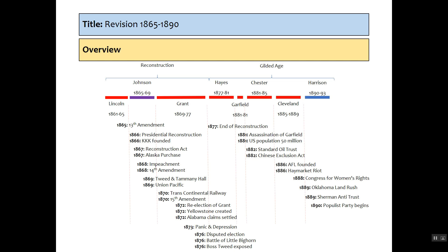The first thing I'm going to show you is this timeline with some major events — by no means all of the events of the Gilded Age and the Reconstruction, but most of them. We've got the presidencies of Lincoln ending in 1865 with his assassination, Johnson, Grant, Hayes, Garfield briefly, Chester Arthur, followed by Cleveland and then Harrison. You can see major events: the 13th Amendment, Presidential Reconstruction, 14th and 15th Amendments, Yellowstone, etc. What we've tried to do is group these in the next slide into significant themes.